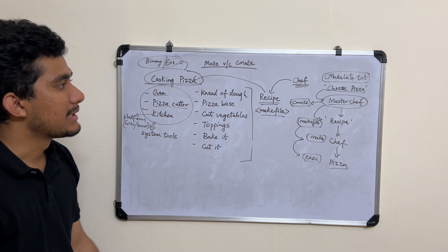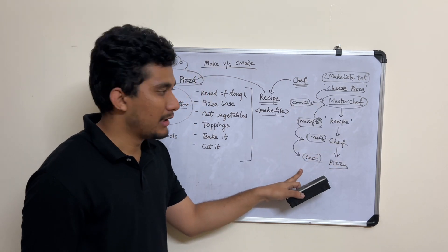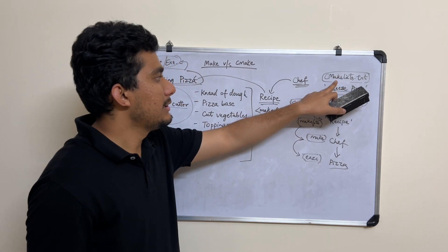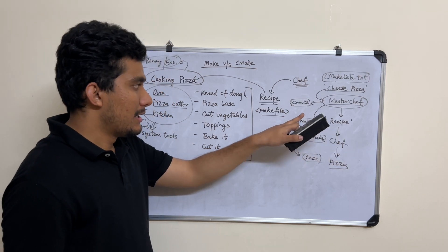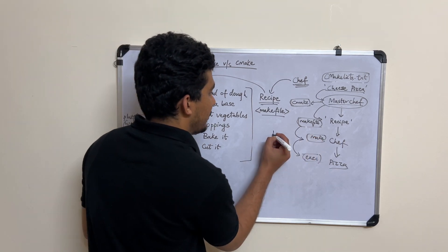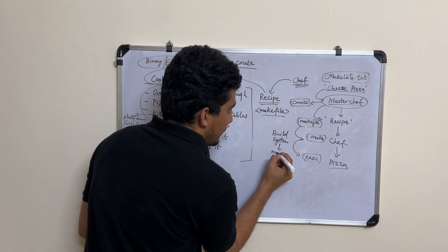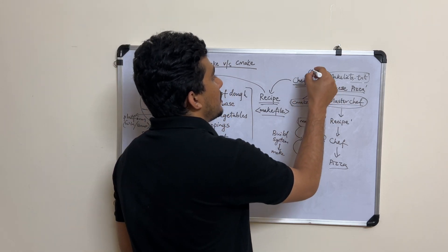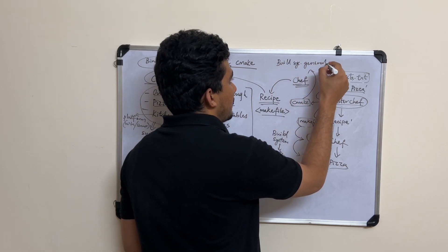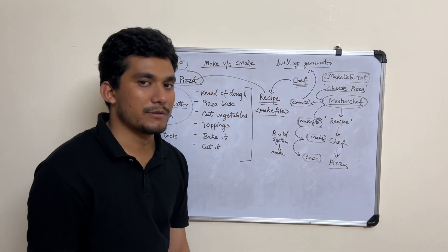CMake is just going to give you the recipe — it won't give you the binary directly. CMake's job is to take the high-level instructions, generate a Makefile, and then you give that Makefile to a build tool. Make is your actual build system, whereas CMake is a build system generator — it's not a build system itself, it just helps make the process of building easier.